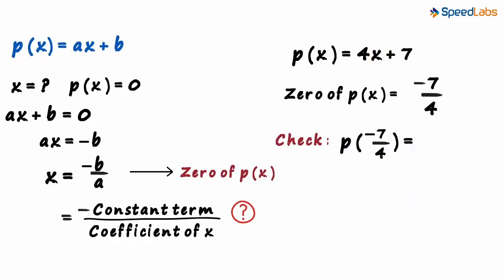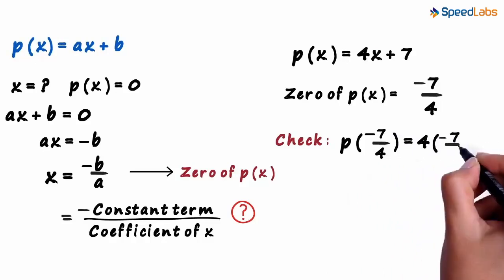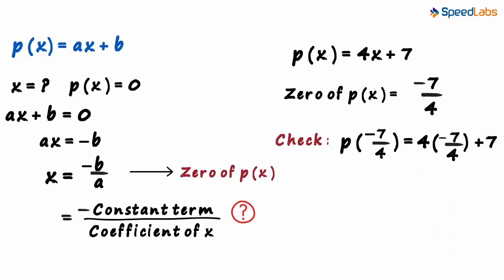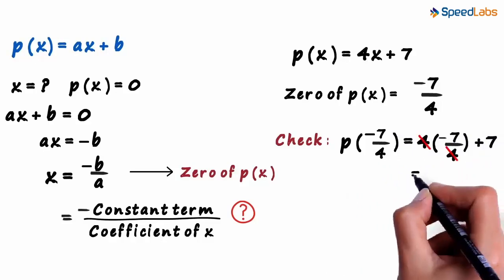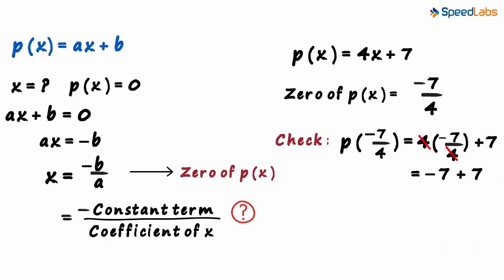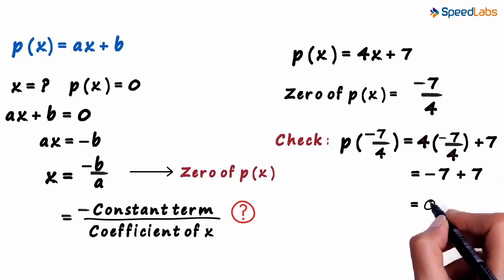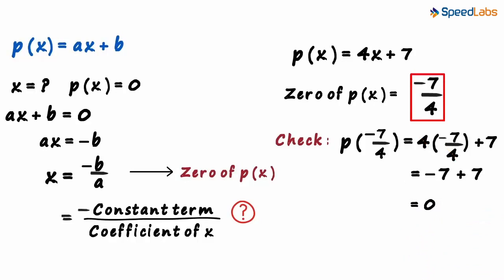It will equal 4 multiplied by minus 7 by 4 plus 7. The 4 and 4 cancel out and we get minus 7 plus 7, which equals zero. So minus 7 by 4 is a zero of the polynomial.